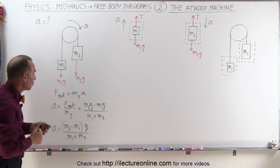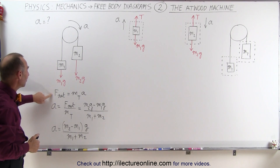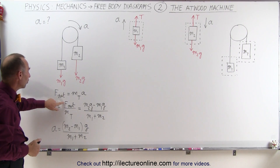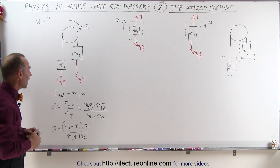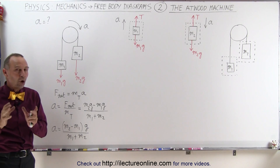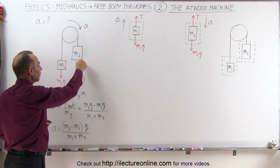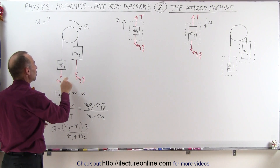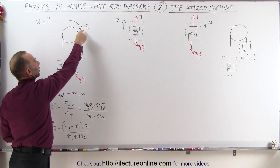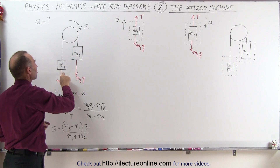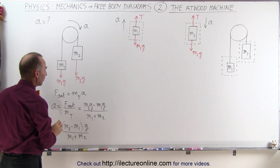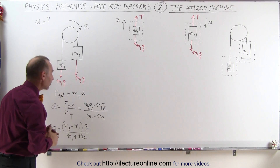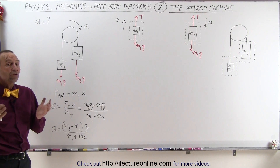To find the acceleration, we use Newton's second law: F net equals Ma. The acceleration is the ratio of net force divided by total mass. The net force is all the forces aiding the acceleration — in this case M2g — minus all the forces opposing it, which is M1g. Forces in the same direction as acceleration aid it; in the opposite direction, they oppose it. We divide by the sum of the two masses to get the acceleration of the system.